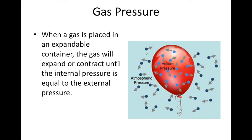When a gas is placed in an expandable container like a balloon, the gas will expand or contract until the internal pressure and the external atmospheric pressure are equal. The balloon will continue to expand or decrease in volume as necessary in order to equalize those pressures.